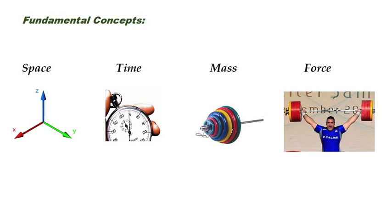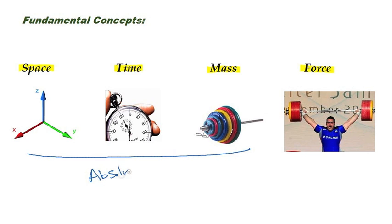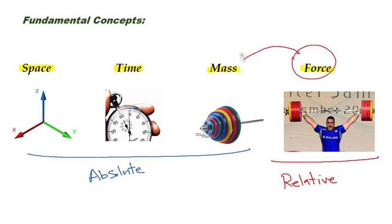We have four fundamental concepts in Engineering Mechanics: Space, Time, Mass, and Force. Space, Time, and Mass are absolute concepts, independent of each other. On the other hand, the concept of force is a relative concept, which is dependent on mass and time.